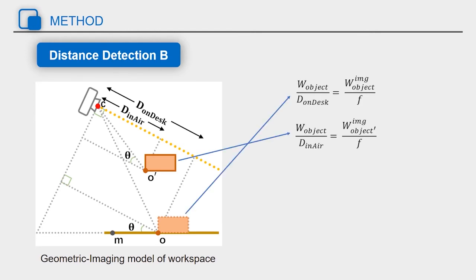We also establish the relation between the actual length of the line segment and the pixel length in the image. By correlating these equations, we can get an equation for the distance of the object in the air.